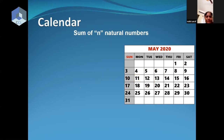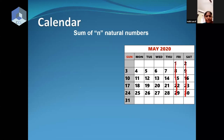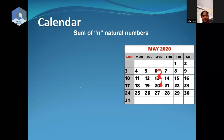Anybody else observe something new? Please share. Very good point. If we see it vertically, the numbers are alternately even and odd — like 6, 13, 20, 27. Very nice. Numbers are alternately even and odd because you are adding 7 each time — adding 7 to odd gives even, and adding 7 to even gives odd. So that is another interesting thing.